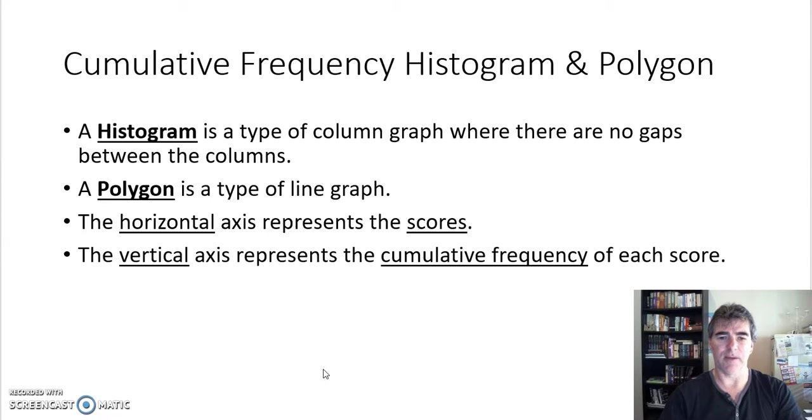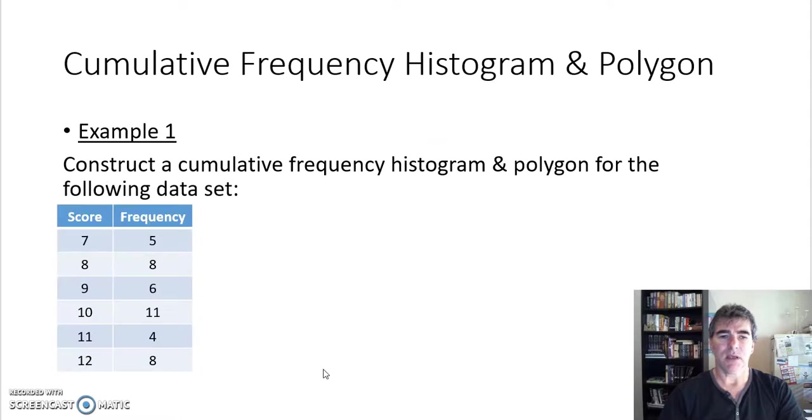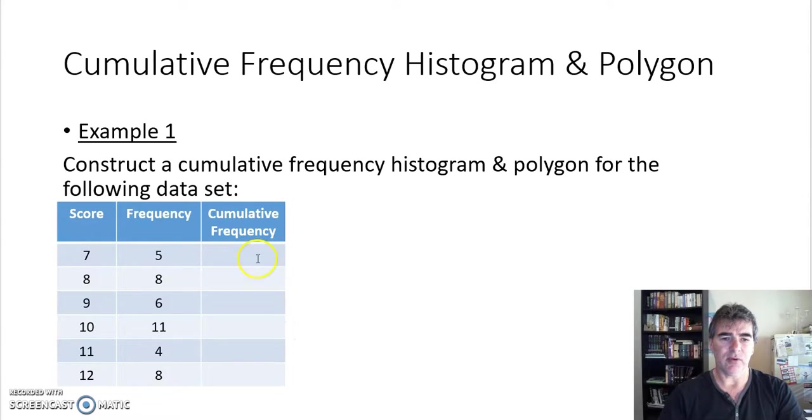First example: let's construct a cumulative frequency histogram and polygon for the following data set. But before we can do that, we need to calculate the cumulative frequency. So we need to add an extra column here. There's no tally marks because the scores are already being organized. We know that frequency, we've got scores from 7 to 12.